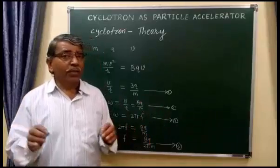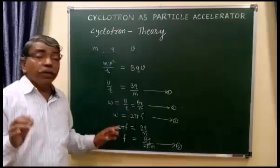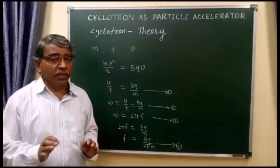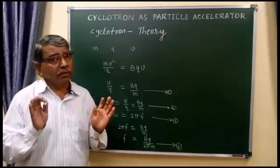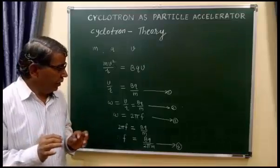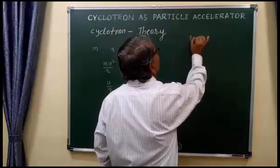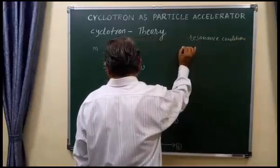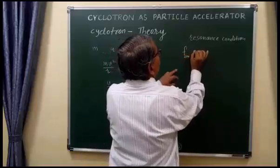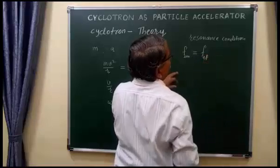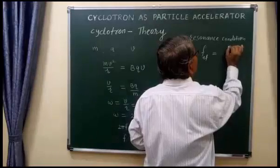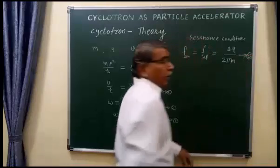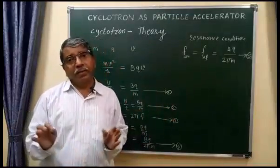Now, what is the resonance condition? When the frequency of revolution of the positive ion is exactly equal to the frequency of the radio frequency oscillator, then maximum acceleration of the positive ion will take place. That is called the resonance condition. So the resonance condition is: frequency of ion = frequency of radio frequency oscillator = BQ / (2πM). This is equation number 5.